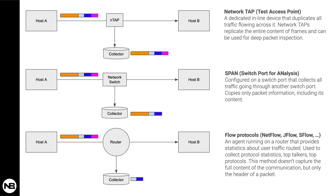The second method uses a network switch, where you configure a port in monitor mode — similar to a tap — and the switch replicates all traffic flowing across two ports or on a specific VLAN. The third method is higher-level: flow protocols give you statistics about how your network is used without copying actual traffic. Instead of logging packets, it provides statistics on top IPs, top talkers, or top applications.